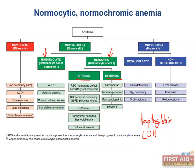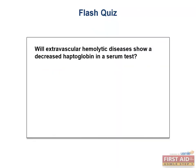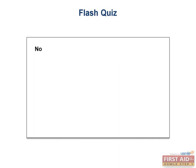Extravascular hemolysis occurs in the reticuloendothelial system, mainly in the spleen. In conditions where the RBC surface looks abnormal to splenic macrophages, macrophages will extravascularly hemolyze those RBCs. Conditions such as spherocytosis, sickle cell, and G6PD deficiency cause these cells to be stiff or abnormally shaped, lacking the important biconcave disc shape, so they can't squeeze through the cords of the spleen and are taken up by macrophages. These patients will also have an elevated LDH, and in addition, they may develop an unconjugated hyperbilirubinemia that leads to jaundice. Haptoglobin will remain normal in extravascular hemolysis, because macrophages that phagocytize the RBCs inside the spleen do not release hemoglobin as free hemoglobin, so haptoglobin does not bind it and levels remain normal.